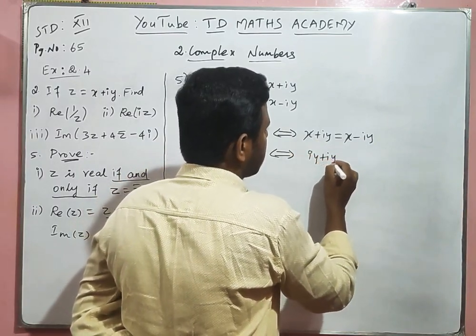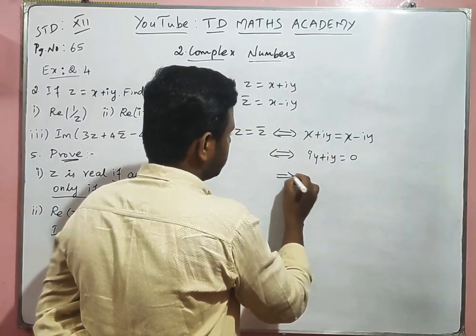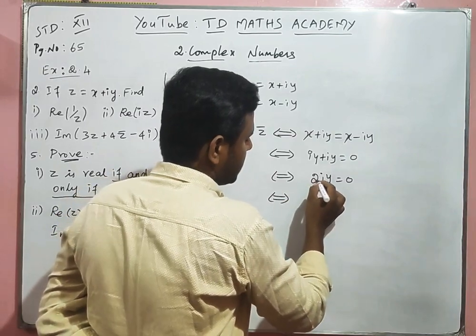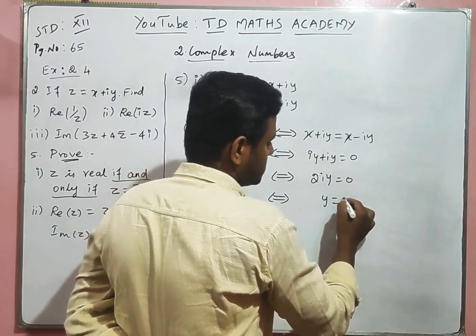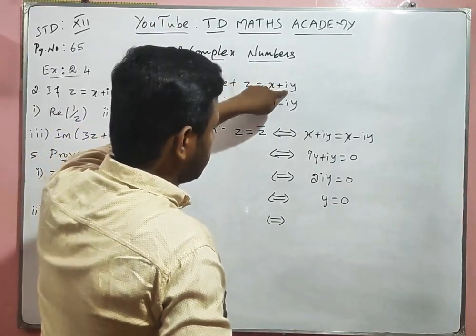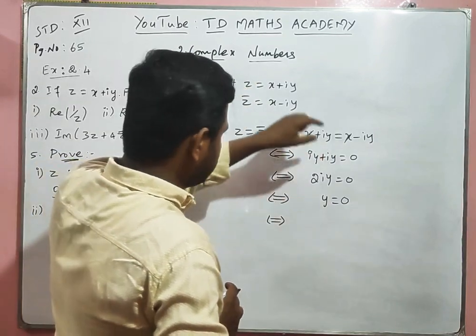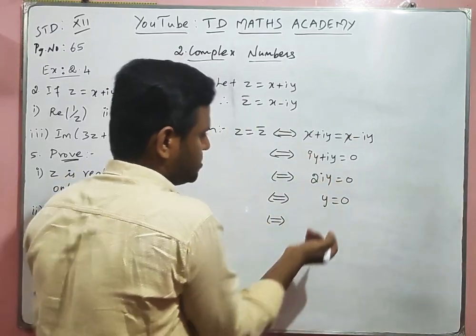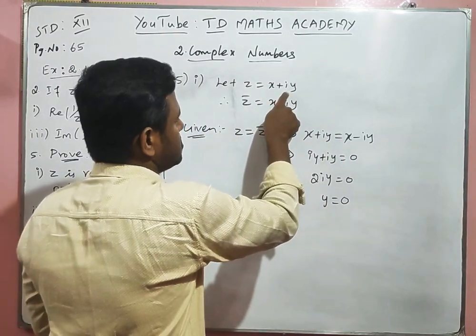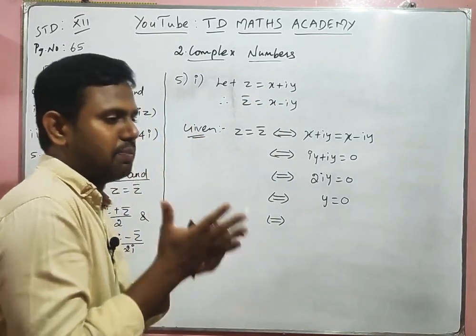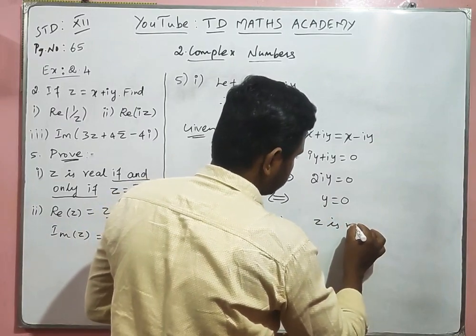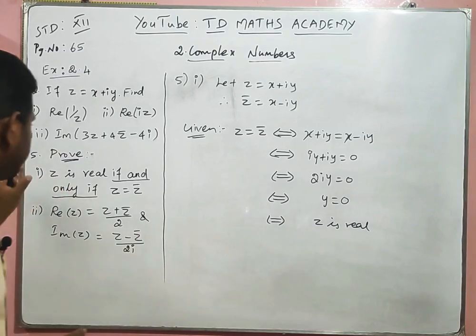Therefore 2iy = 0, which implies y = 0. When y = 0, z = x, which is purely real. Hence proved: Z is real if and only if Z = Z̄.